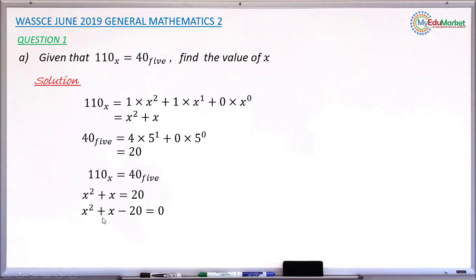Solving this by factorization method, the factorization of the left-hand side gives x minus 4 into x plus 5 equals 0.